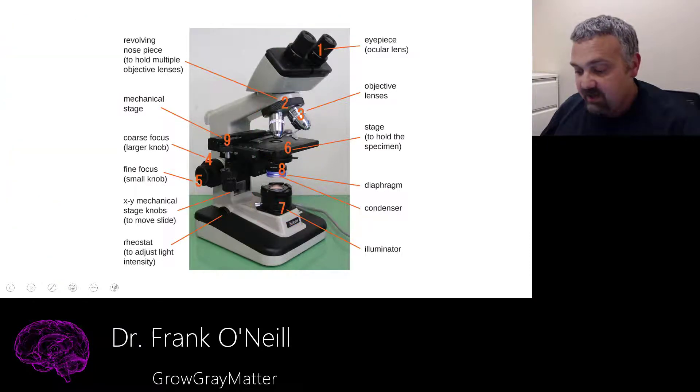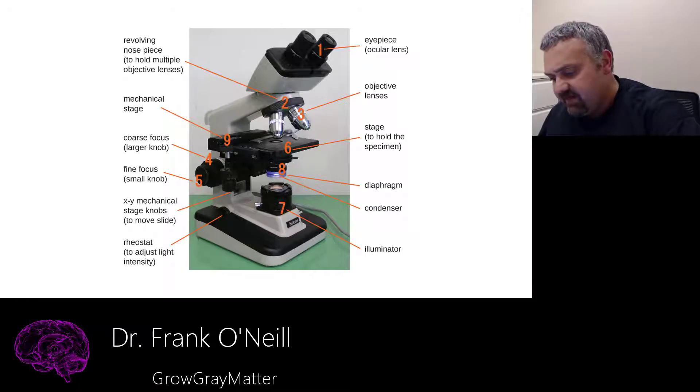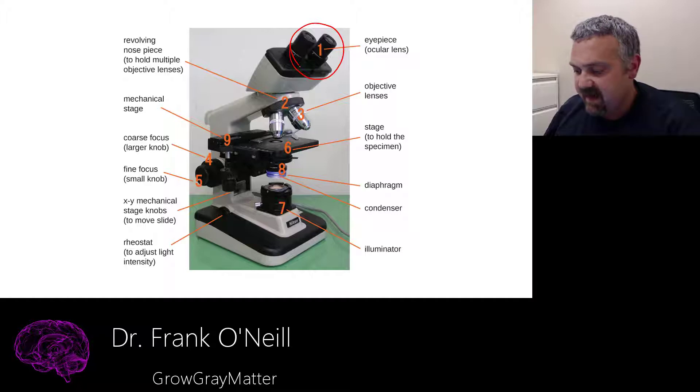All right, let's actually look at the individual parts here. So I'll just go in the numbered order. So number one, we do have the ocular lens, the eyepiece. That's going to give us 10, 20, 25x magnification.